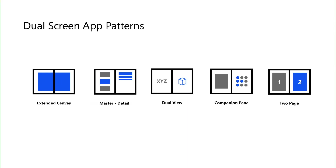My colleague Chigusa Sansen's talk on dual-screen app UX guidance introduced you to the five dual-screen app patterns. A link to her talk is in the deck associated with this video. The five patterns are Extended Canvas, Dual View, Master Detail, Companion Pane, and Two-Page.